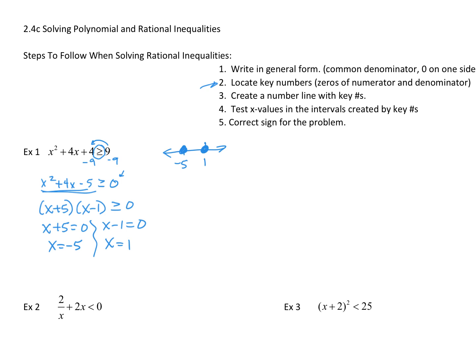Testing values means taking a value — and usually the easiest value to choose is 0. If I choose 0, it falls between negative 5 and 1. I'm going to plug it into the equation where I set it equal to 0. So I have 0 plus 4 times 0 minus 5 — is it greater than or equal to 0? That's 0 and 0, and negative 5 is a negative number. So it came out negative.